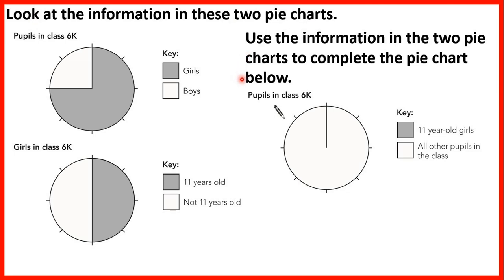From the first pie chart of pupils in class 6K, the shaded section represents girls and the unshaded section represents boys, so three-quarters or six-eighths of the class are girls. A second pie chart shows just the girls in class 6K, and that shows us that four-eighths — or half — of the girls are 11 years old. We can put this information onto the combined pie chart by splitting the girls' section in half.